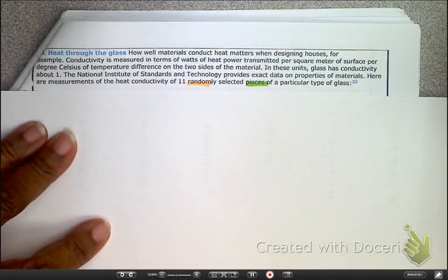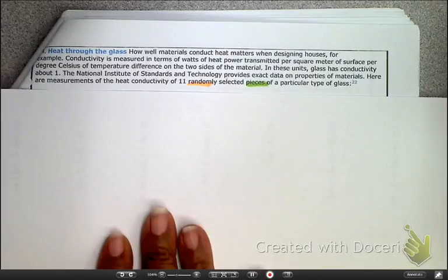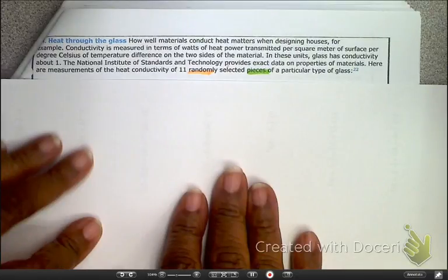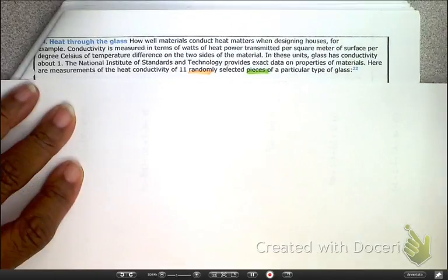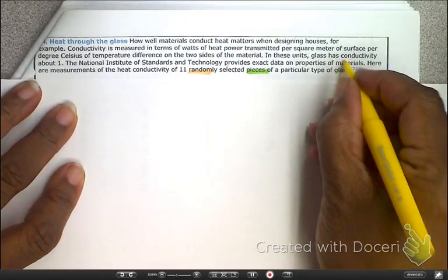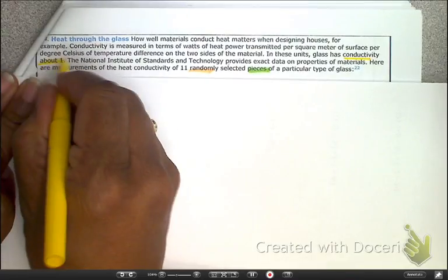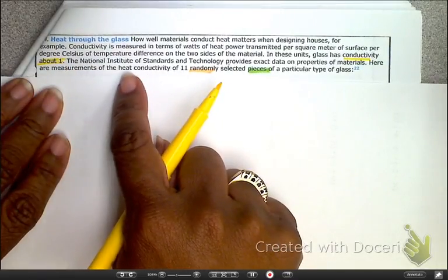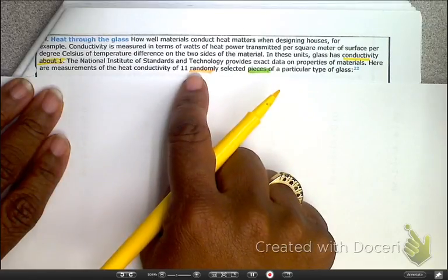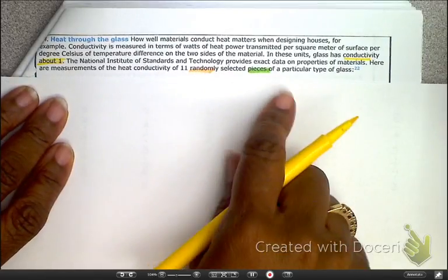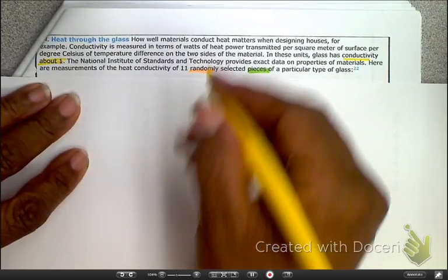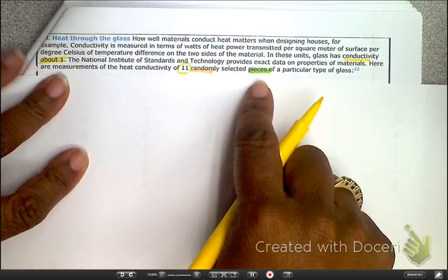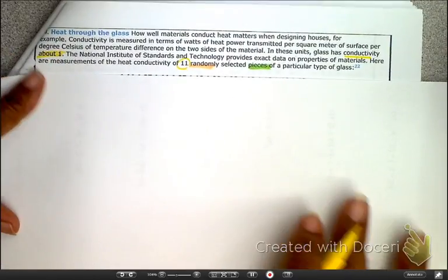Go ahead and read over this and highlight the important information. As we're looking at this, the conductivity is about 1, so that's going to be our mu, and NIST provides the exact properties of this material. They randomly selected 11 pieces of a particular glass. Let's get this test started.